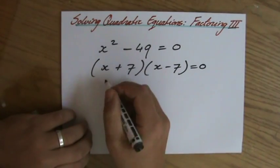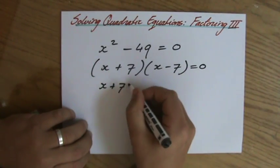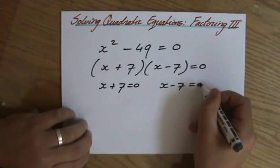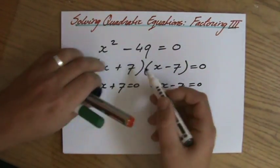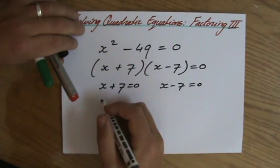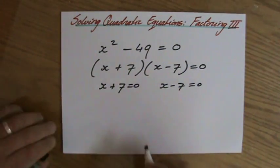Zero product property. So x plus 7 has to be 0, or x minus 7 has to be 0. Because 0 times a number will give me 0, or a number times 0 is going to be 0.